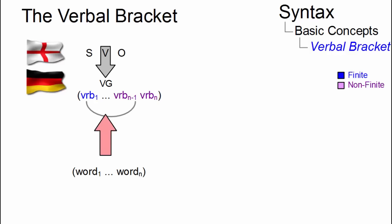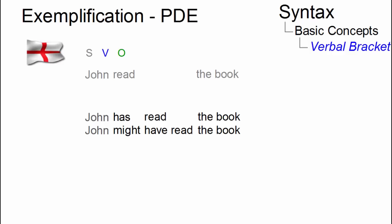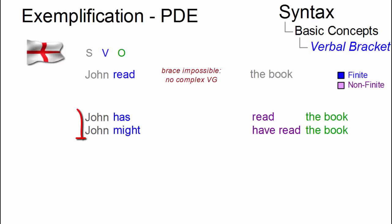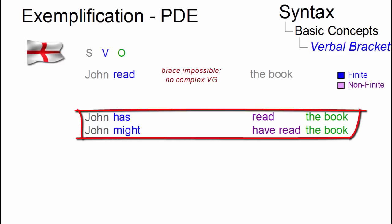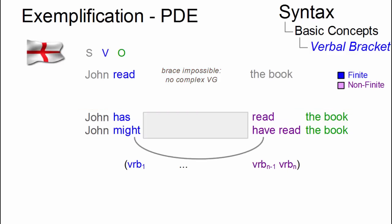Here are some examples in present-day English. In 'John has read' and 'John might have read the book', we can construct a verbal bracket — for example, one that contains a negative particle and an adverb. The object, by contrast, cannot become part of the brace.